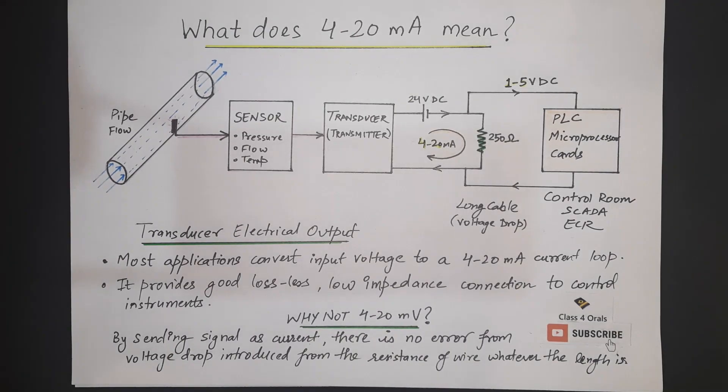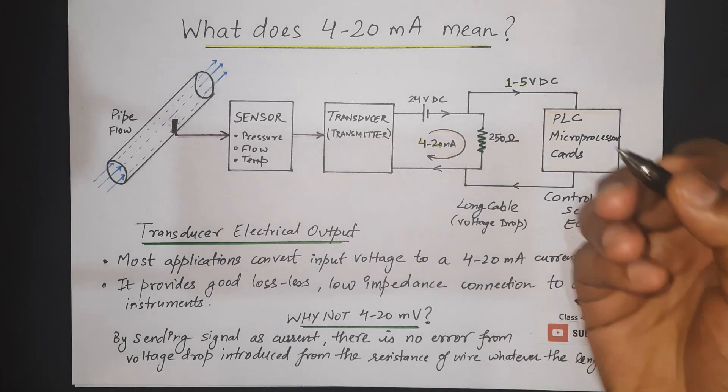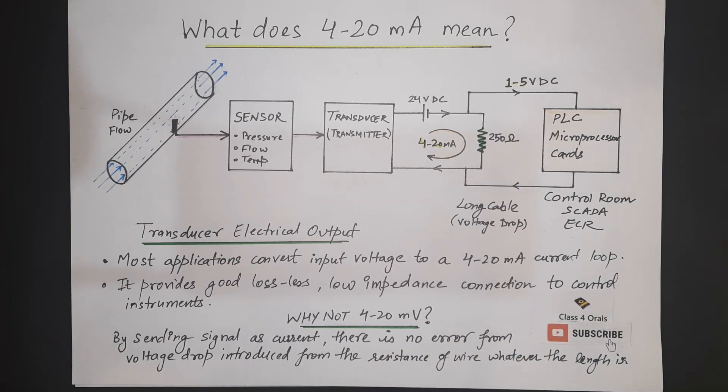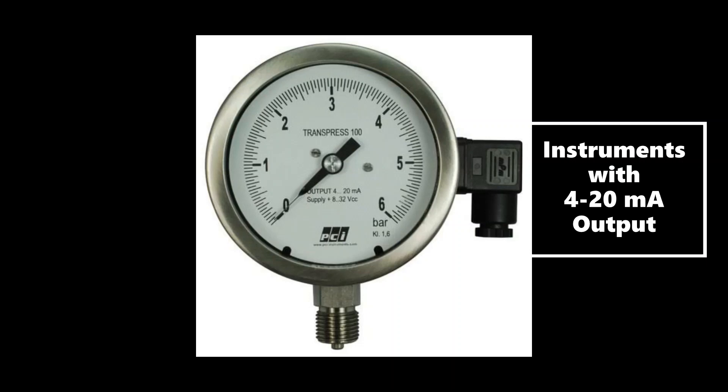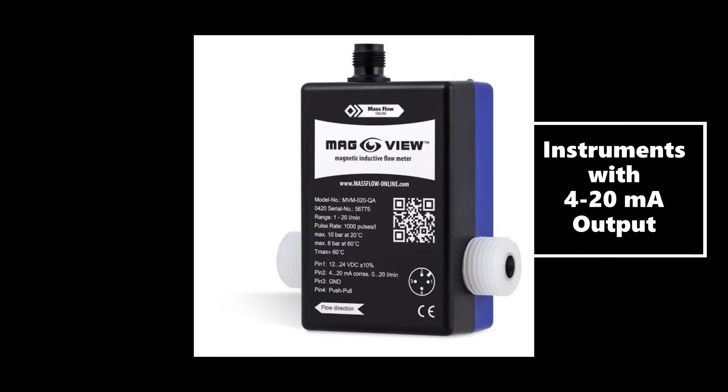Now we are going to see what all instruments we are using. So let's see which instruments we are using for measuring the parameters. The analog meter, pressure gauge, flow meter,